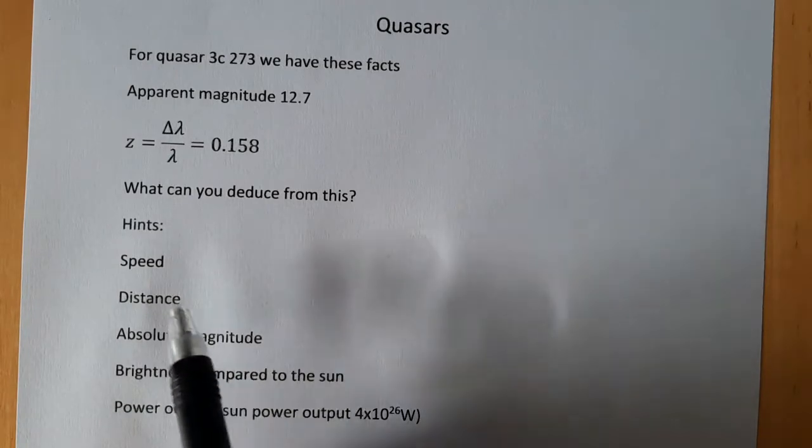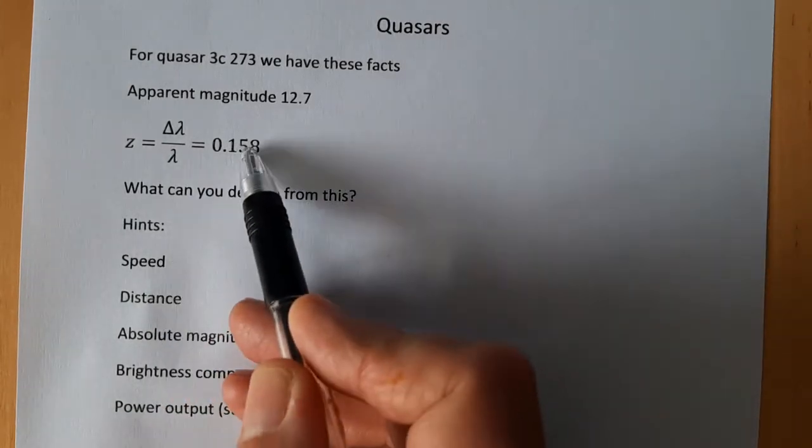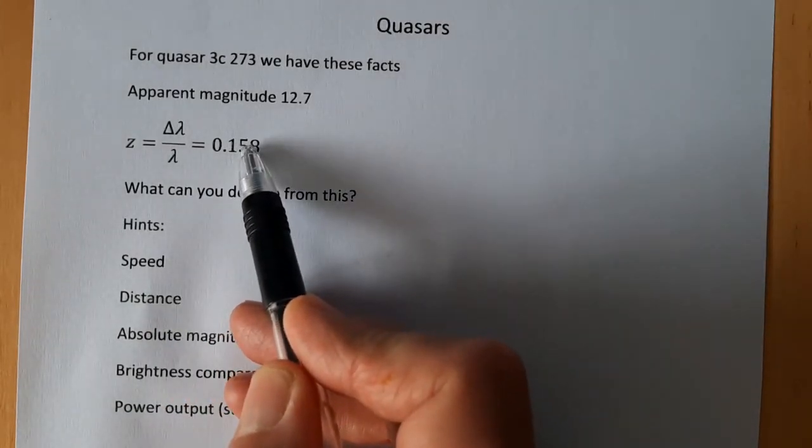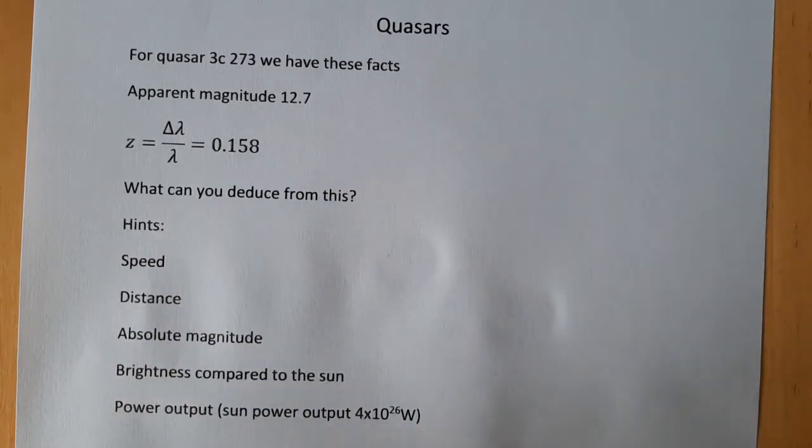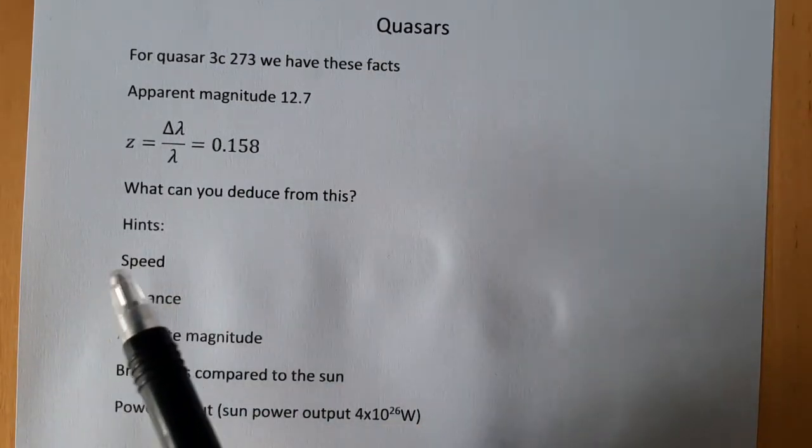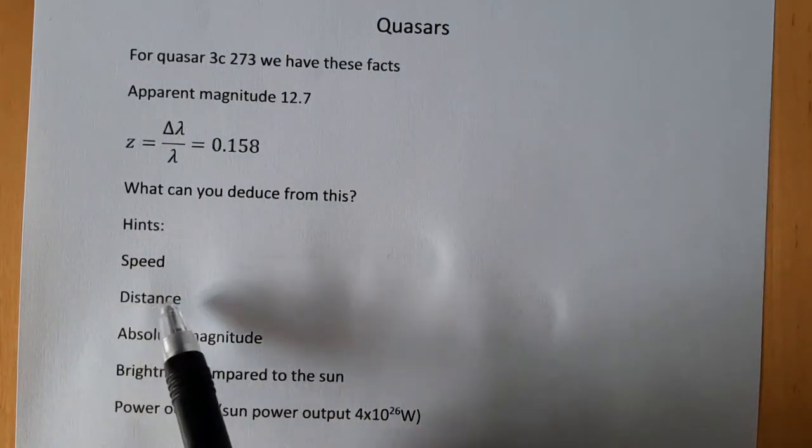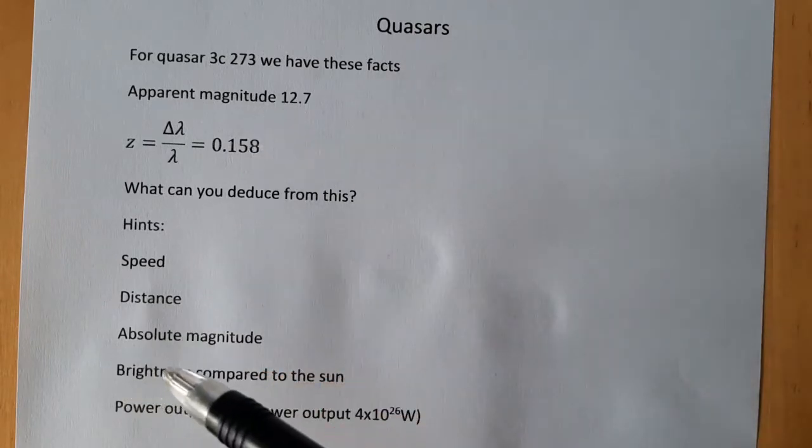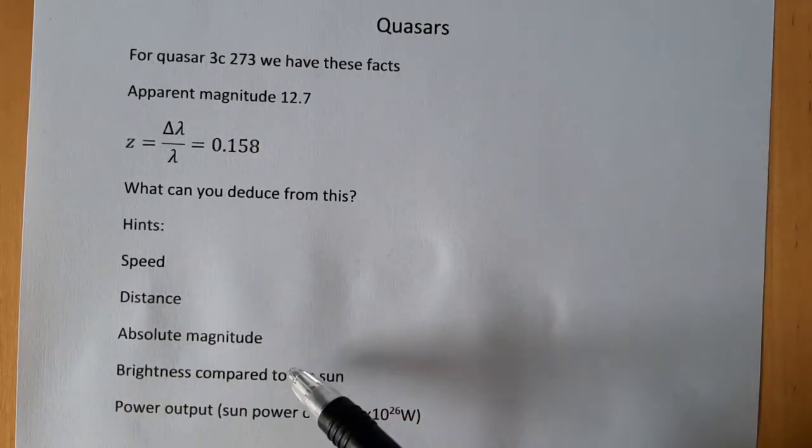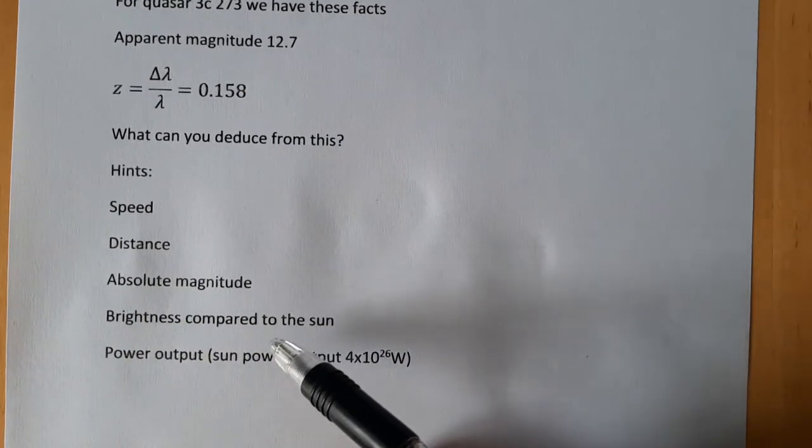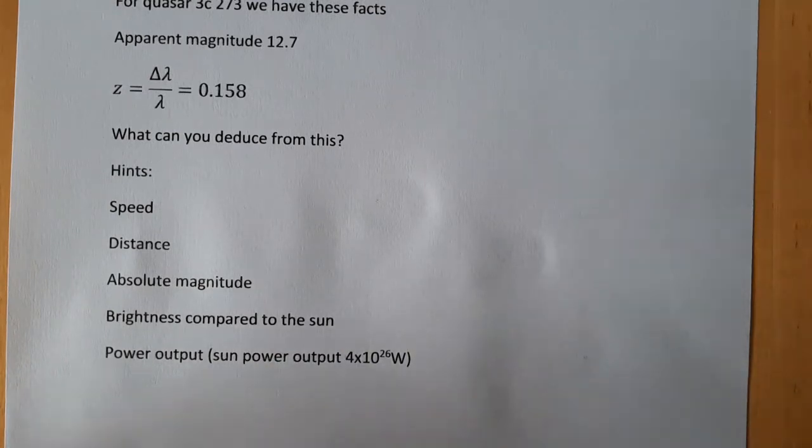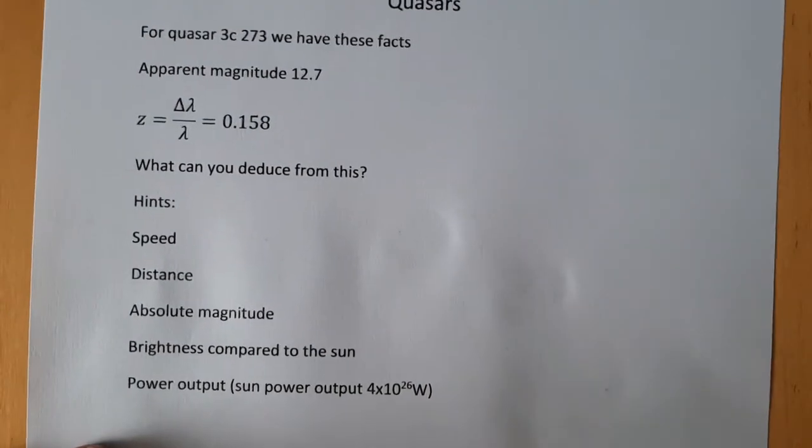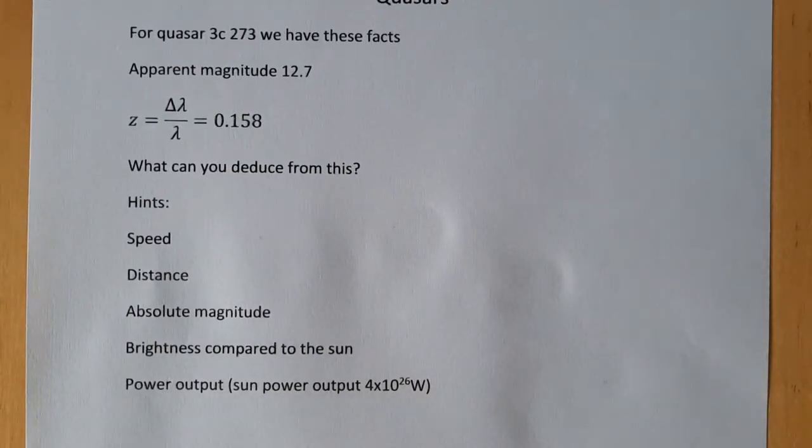So if you're feeling really brave, off you go. We need a bit of a hint. Well, we should be able to get a speed from the Doppler, shouldn't we? And if we've got a speed by thinking about the expansion of the universe, we should get a distance. If we've got a distance and we've got an apparent magnitude, then we should be able to get an absolute magnitude. We should then be able to compare the brightness to the sun and then we should be able to find the power output. OK, so off you go.